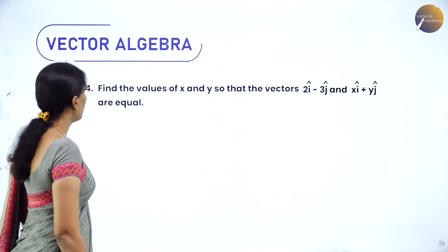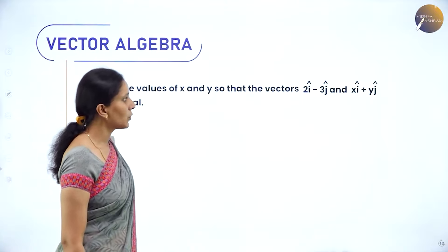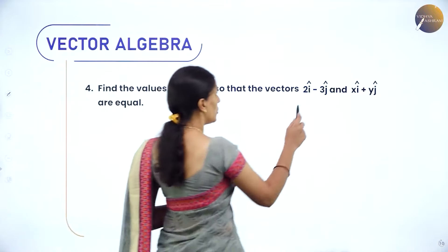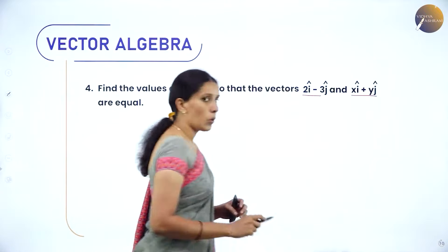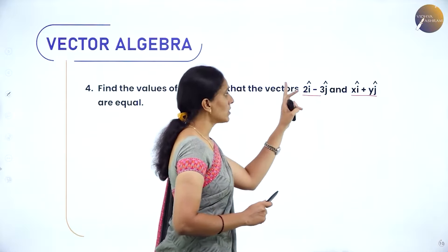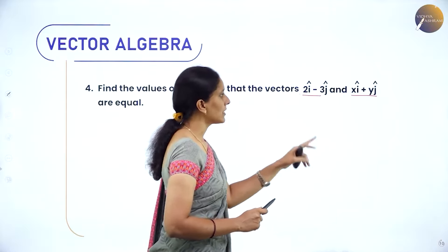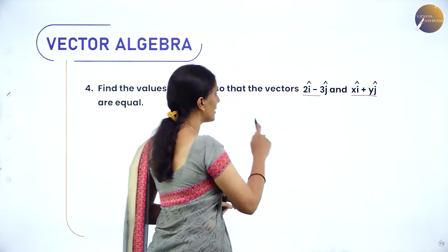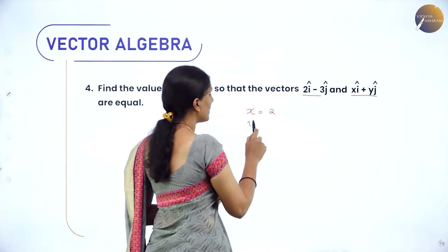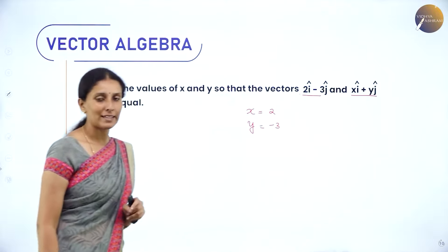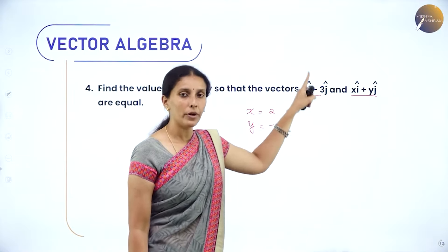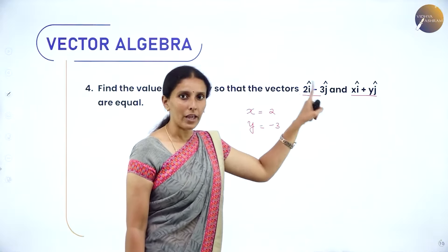Example: Find the values of x and y so that the vectors 2î−3ĵ and xî+yĵ are equal. Two vectors are equal only when corresponding components are equal. So comparing the î components: x = 2, and comparing the ĵ components: y = −3. Make sure î component equals î component, ĵ component equals ĵ component, and k̂ component equals k̂ component.